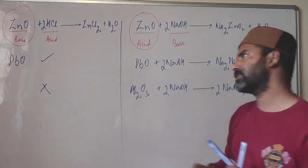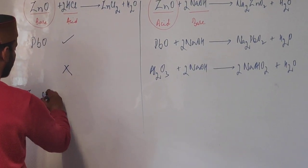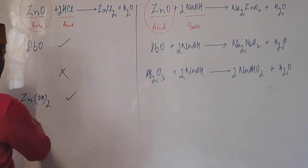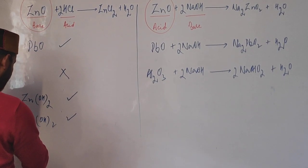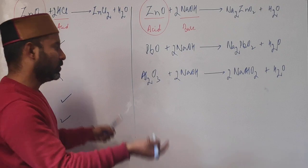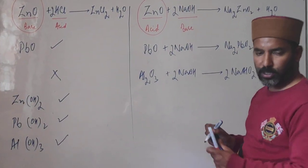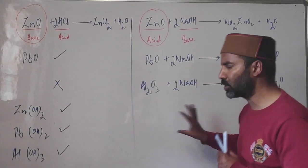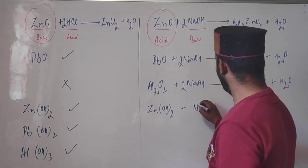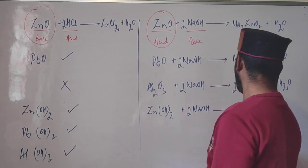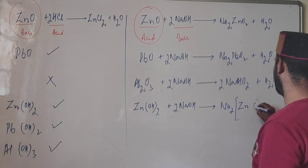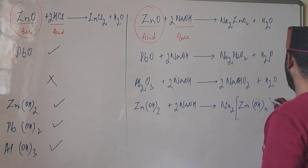Similarly, the hydroxides of these metals are also amphoteric. Zinc hydroxide Zn(OH)2 is amphoteric — it reacts with acid as well as with base NaOH. With NaOH it forms the complex salt sodium zincate, which can also be written as Na2[Zn(OH)4]. Lead hydroxide and aluminium hydroxide are also amphoteric.